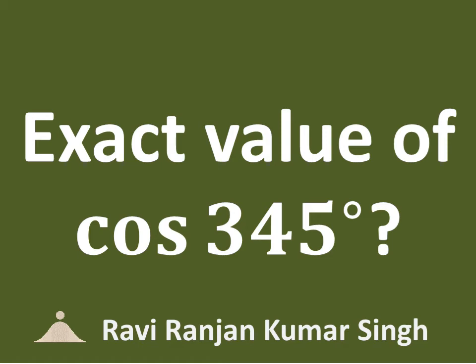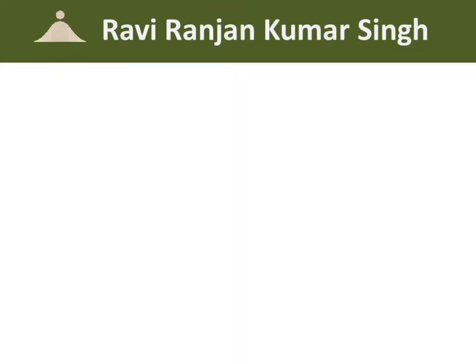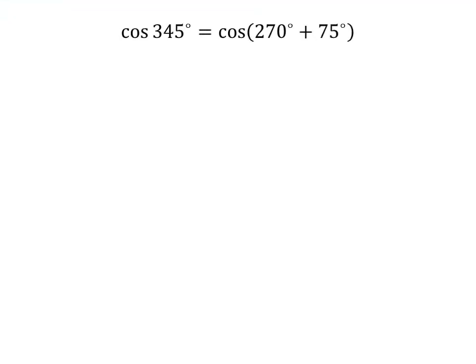In this video, we will learn to find the exact value of cosine of 345 degrees. 345 degrees is equal to 270 degrees plus 75 degrees. So cosine of 345 degrees is equal to cosine of 270 degrees plus 75 degrees.